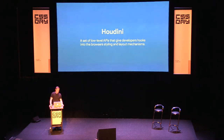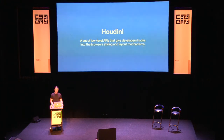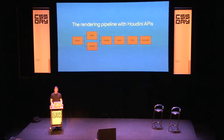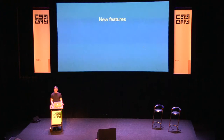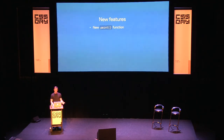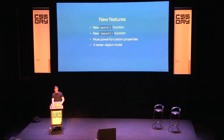So what's the solution? This is where we get to the second part of the talk: Houdini. Houdini is a set of low-level APIs that give developers hooks into the browser's styling and layout mechanisms. In theory, with Houdini you'd have JavaScript access to all steps in the rendering pipeline — you could modify how the layout phase works, how the paint phase works, or how parsing works — instead of having to loop back through the entire pipeline again.